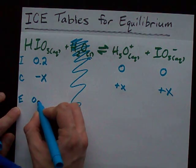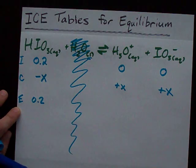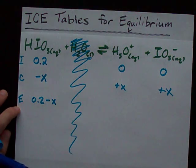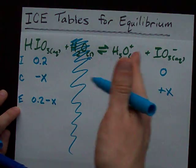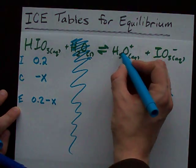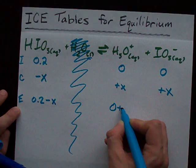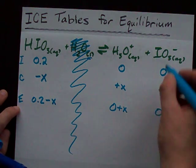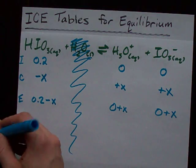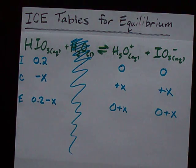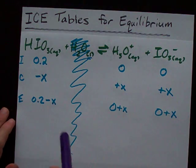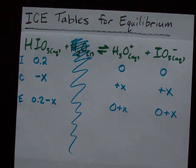At equilibrium then, we have 0.2 moles per liter of iodic acid less some amount. What's that amount? We're going to have to figure that out. Here we start with 0 plus some amount, and we have 0 plus some amount of iodate as well. So now we have equilibrium concentrations of each species. Although there is an X, we're going to have to solve for X ourselves.